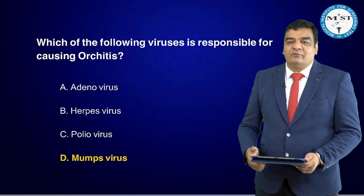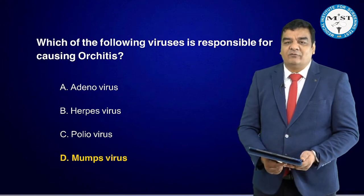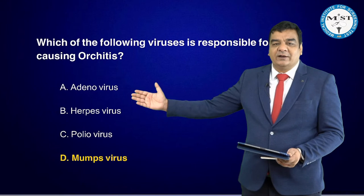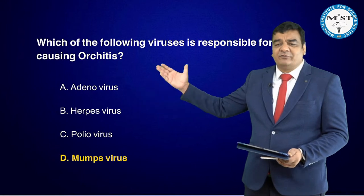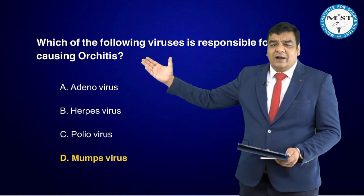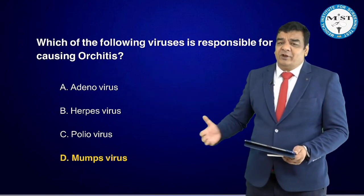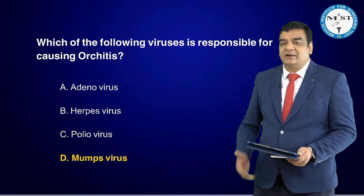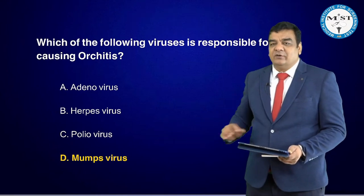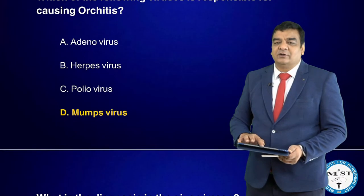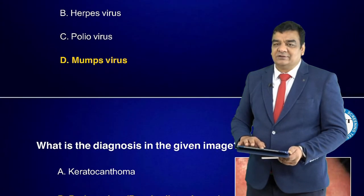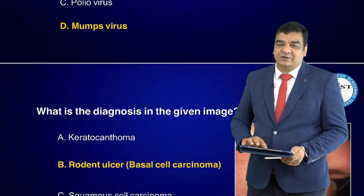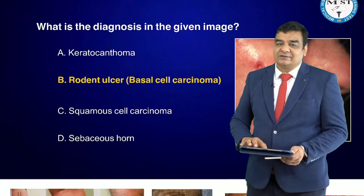Which of the following viruses is responsible for causing orchitis? This was a very simple question — we have been taught right from the beginning that it is the mumps virus which often causes orchitis. So a simple single-liner: mumps virus causes orchitis.